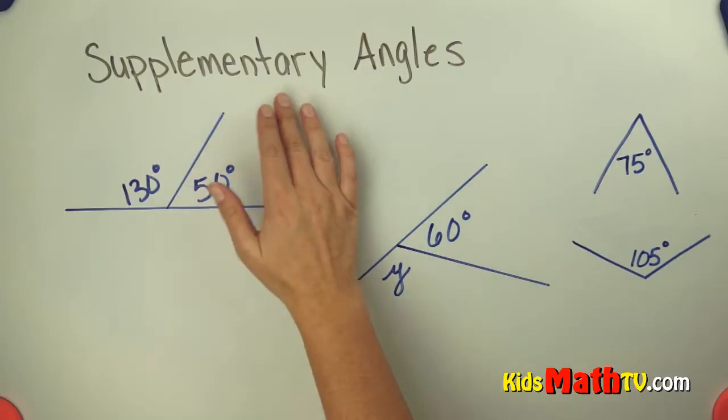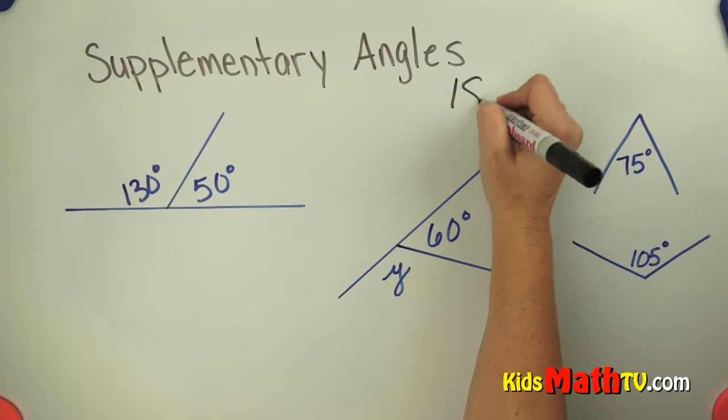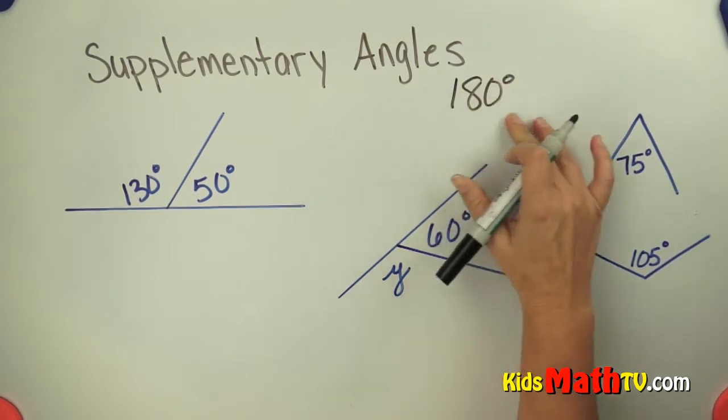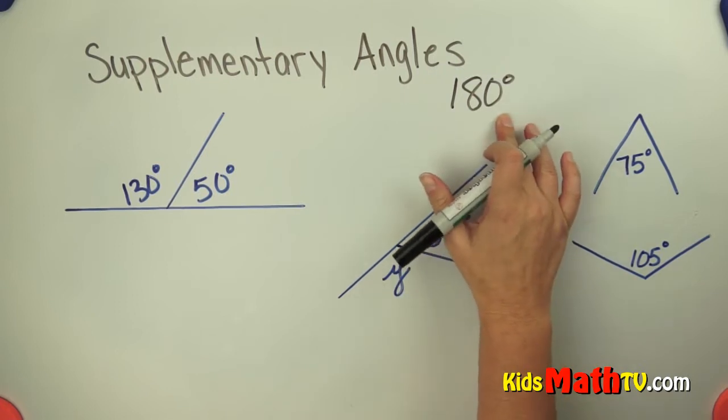In this lesson you will learn about supplementary angles. In supplementary angles the magic number is 180 degrees. So supplementary angles are angles that add to 180 degrees.